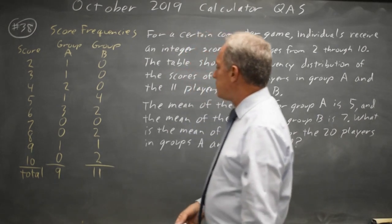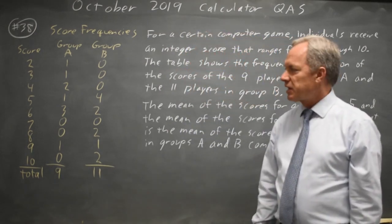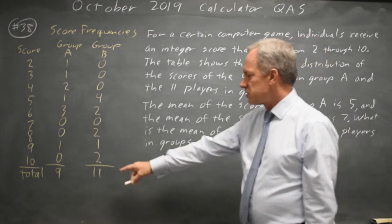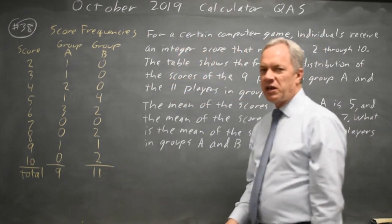And we can find the mean either by writing out all the scores, add them up, and divide by 20, since there's a total of 20 scores. Or we have a shortcut.